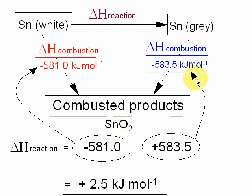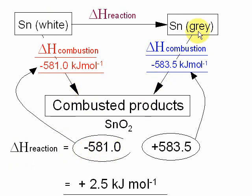Similarly for the grey tin, we've been given the combustion enthalpy of that, and that will give you the same combusted products — the same tin oxide. So to work out delta H for the reaction, we're going to start here. We want to go down the red arrow so that sign stays the same — it's still minus 581. But then going up the blue arrow, change the sign: that negative becomes a positive.